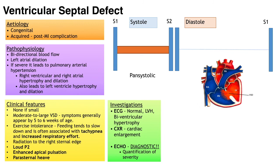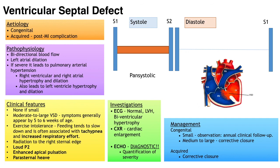Here is what it sounds like. On ECG a small defect may be normal, but larger defects may show left ventricular hypertrophy or biventricular hypertrophy. Chest x-ray may show cardiac enlargement, and echocardiogram is diagnostic — used to quantify severity and to follow up patients with smaller VSDs. Management: small defects may need only observation and annual clinical follow-up with echocardiogram. Medium to large defects and acquired VSDs will need corrective closure.